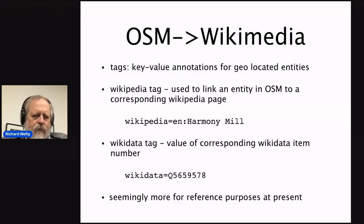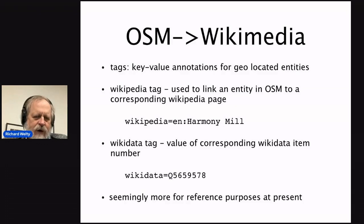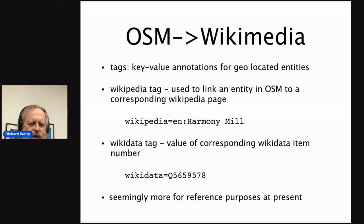How does OpenStreetMap hook up to Wikimedia? For the Wikimedians out there, OpenStreetMap has a concept of tags — key-value annotations on geolocated entities. So I can go to a geolocated entity that has a matching Wikipedia page and tag it with the name of the Wikipedia page. Likewise, I can get the Wikidata item for a corresponding entity and put it in a tag. These in OpenStreetMap are more for reference purposes and you can get at them with the inspector, but they don't trigger more than showing you those so that you can go to them if you want.